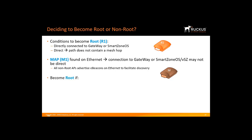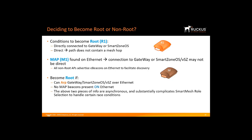An AP will become a root AP if it can ARP a gateway or controller on the Ethernet interface and it does not discover any MAP beacons present on the Ethernet interface. These two pieces of information are asynchronous, which substantially complicates the smart mesh role selection. Certain race conditions can apply. If these conditions are satisfied, the AP then becomes a non-root AP.